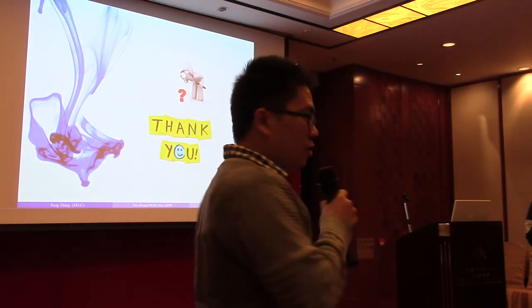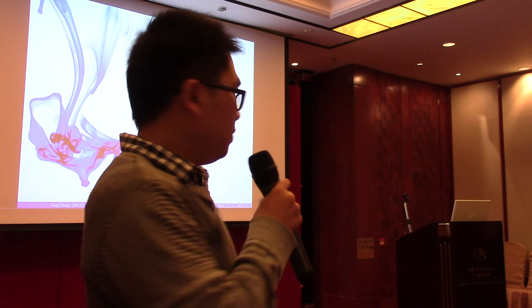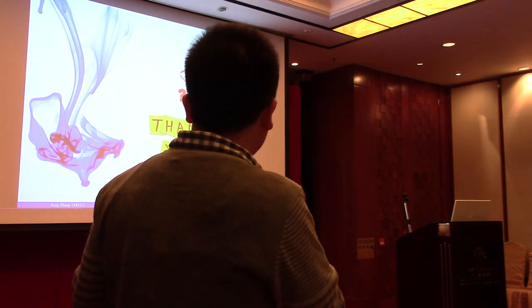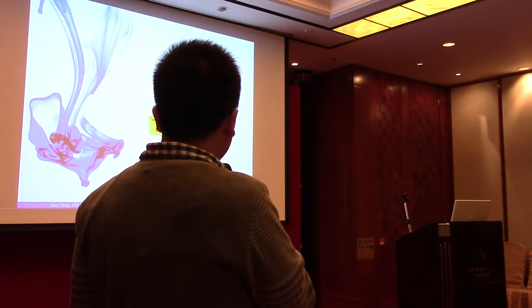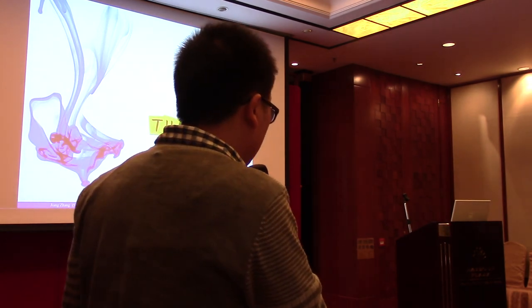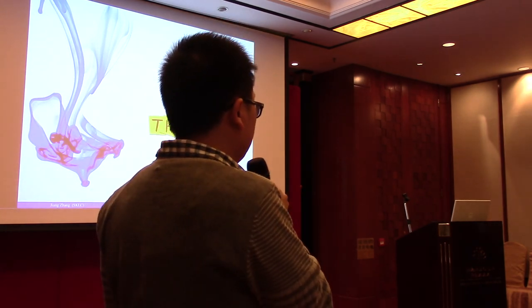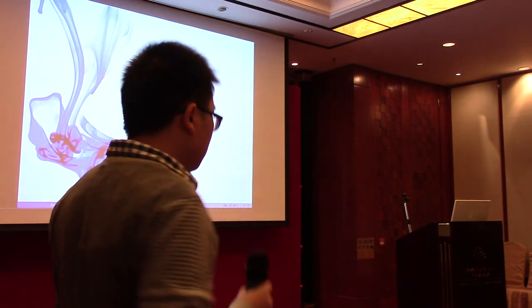Thank you very much for the talk. We have a few minutes for questions. Do we have any? I have one question. You have a generic construction for two-round PAKE from approximate SPH, right? And your instantiation from lattice seems to rely on a random oracle model. Could you tell us something about the difficulty of realizing from lattice without random oracle?